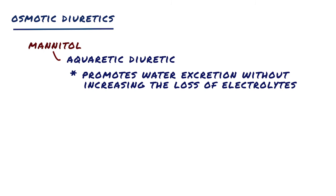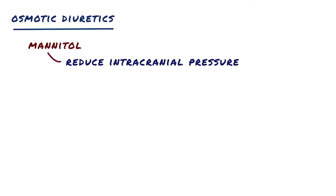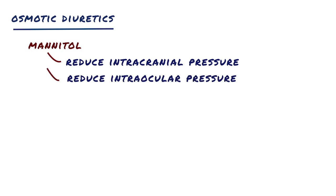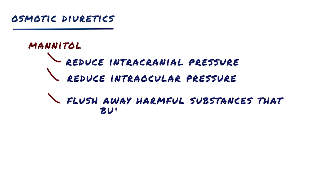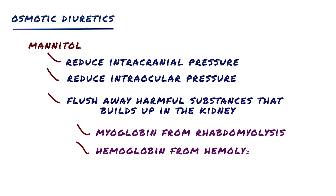Osmotic diuretics alter Starling forces so that water leaves cells and reduces intracellular volume. This effect is used to reduce intracranial pressure in neurologic conditions and to reduce intraocular pressure before ophthalmologic procedures. Since mannitol also increases renal blood flow, it can be used to flush away harmful substances that build up in the kidney, such as myoglobin from rhabdomyolysis — the breakdown of muscles — and hemoglobin from hemolysis, which is the breakdown of red blood cells.